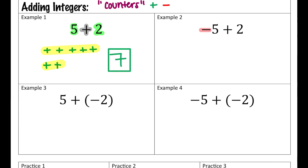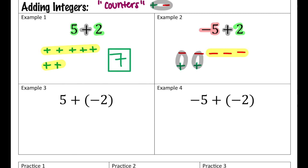In example two, I'm starting with negative five, or five negatives — one, two, three, four, five. And I'm adding two positives to that. I put them directly underneath the negatives because now we have what's called a zero pair. This positive and negative add up to zero, and this positive and negative also add up to zero. Looking at what I have left — zero, zero, and three negatives — means that my final answer is negative three.